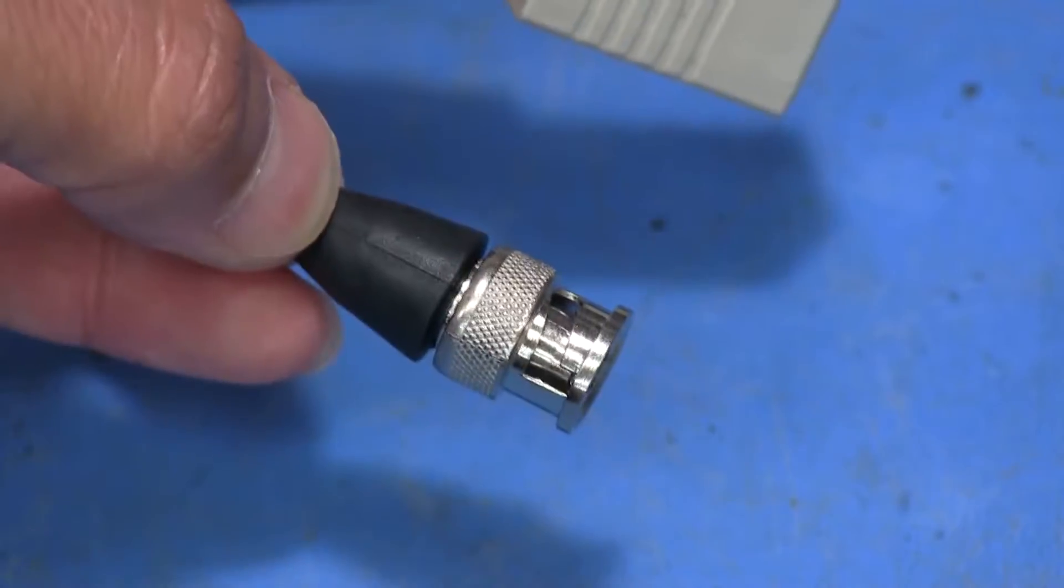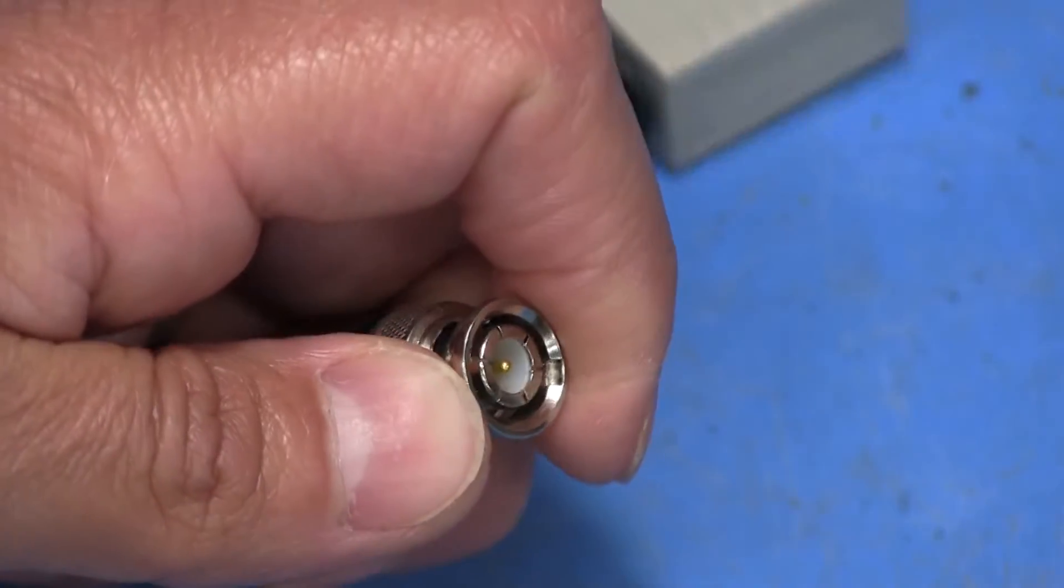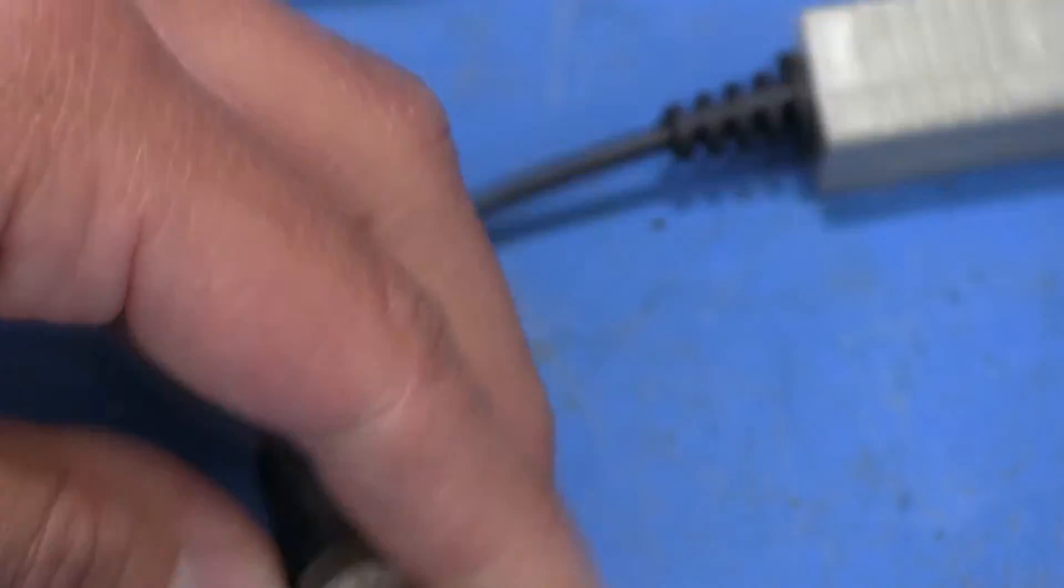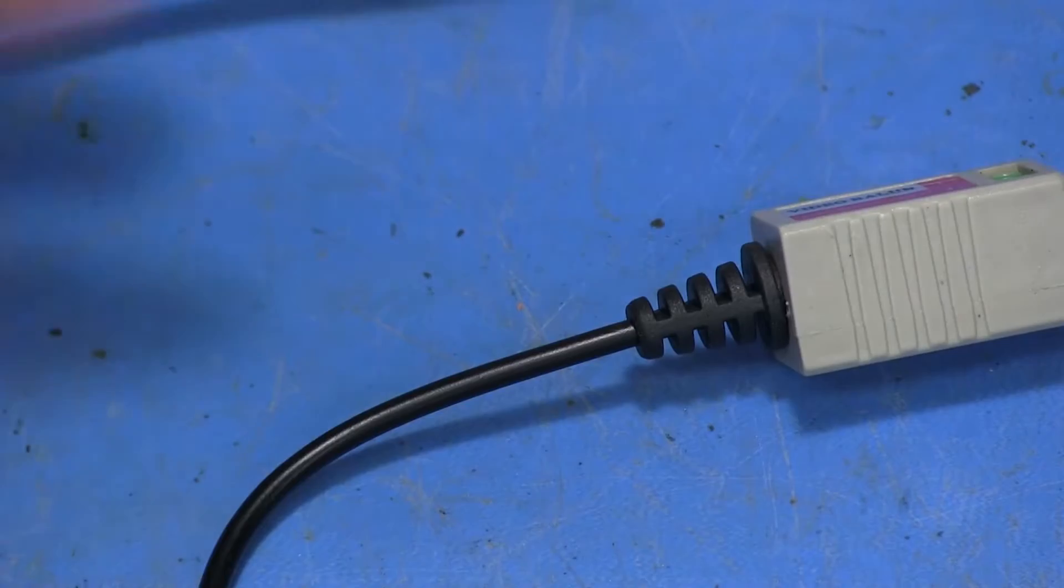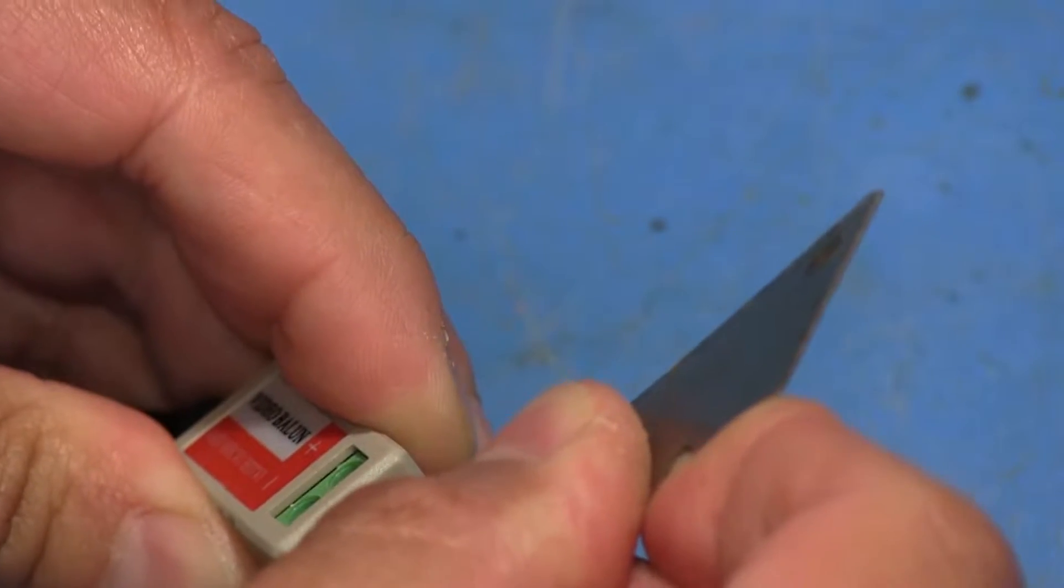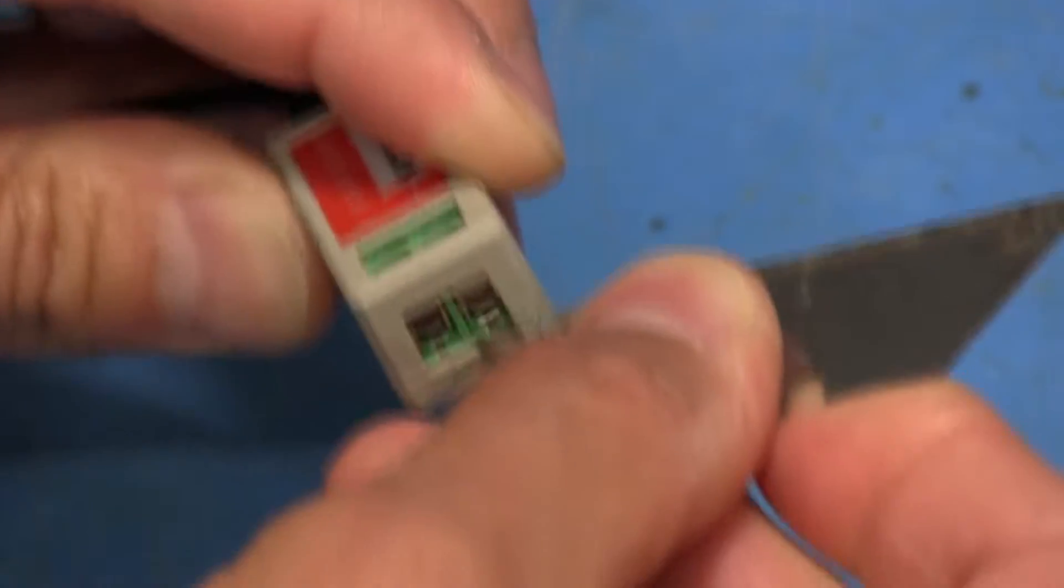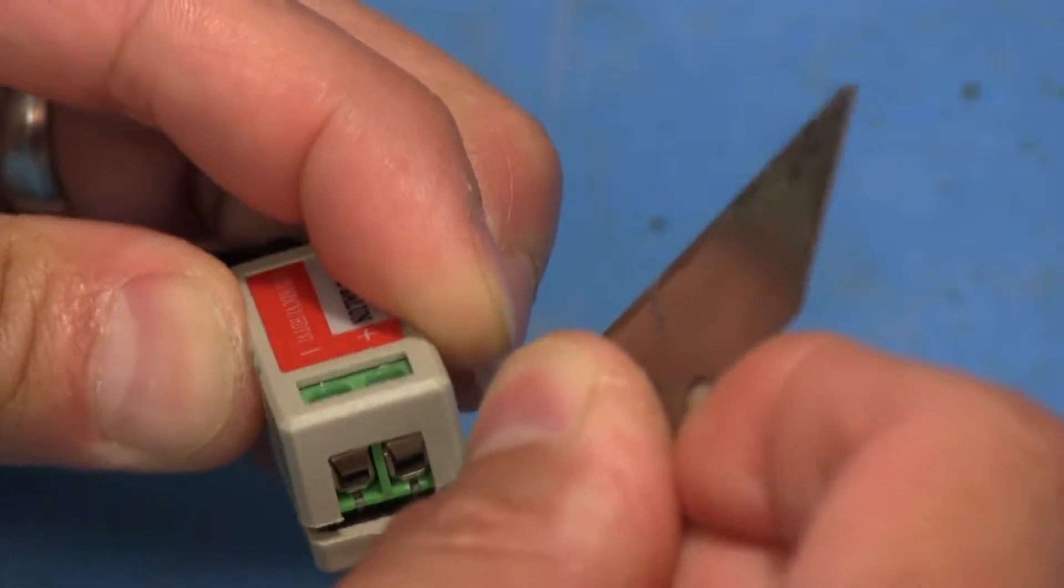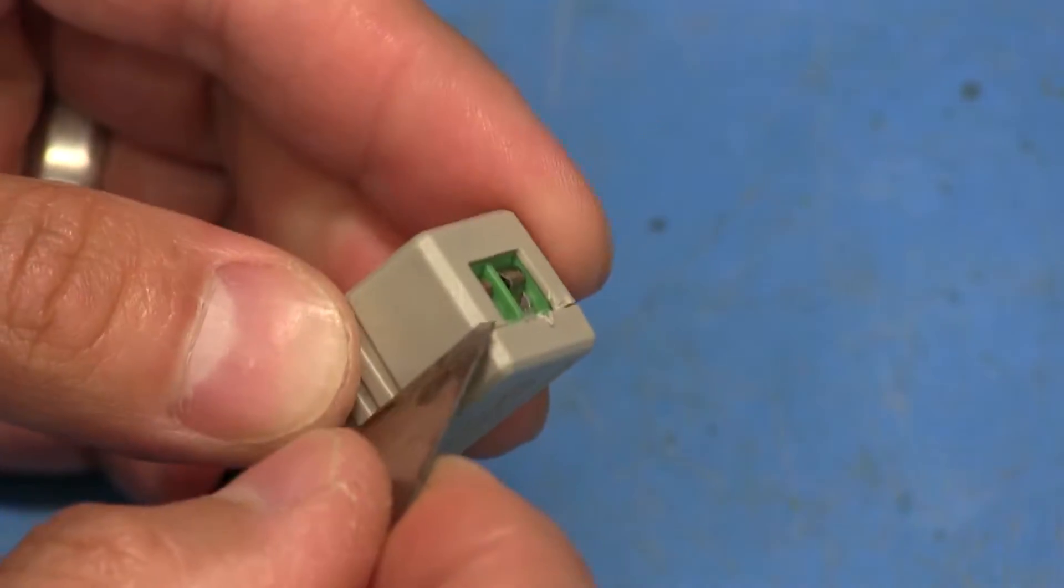And then on the opposite side we just have a BNC connector. These BNC connectors are really not the best quality, but it works. This one is working here. So it looks like this one's already kind of separating right there. If I can get a blade in there maybe I can just pop it open.